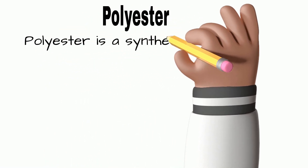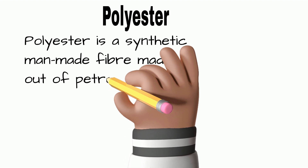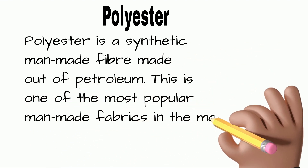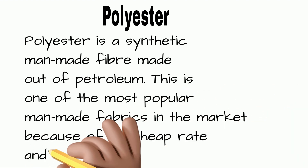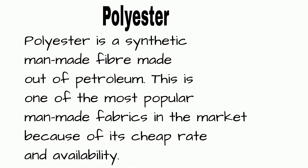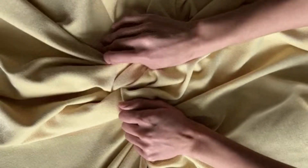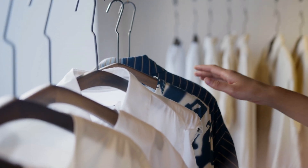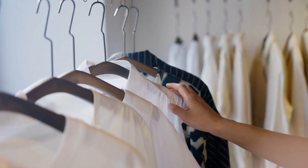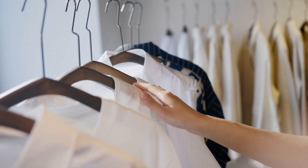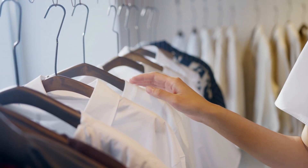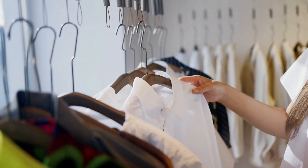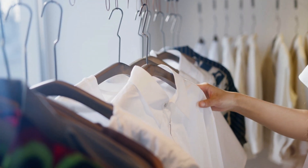Polyester is a synthetic man-made fiber made from petroleum. It is one of the most popular man-made fabrics in the market because of its cheap rate and availability. It is a wrinkle-free fabric because it does not absorb water. Polyester is also called a magical wash-and-wear fabric, as it does not retain any water after washing. But it does retain oil, so any oily stain is very hard to remove.